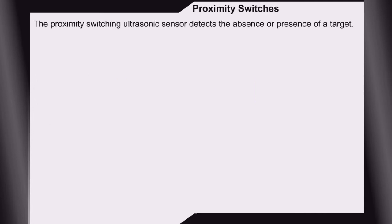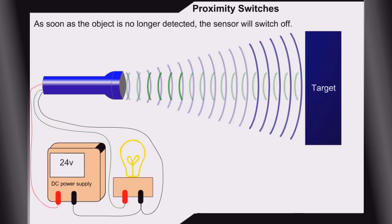Proximity switches. The proximity-switching ultrasonic sensor detects the absence or presence of a target. The sensor will switch on when an object is detected within its sensing range. As soon as the object is no longer detected, the sensor will switch off.